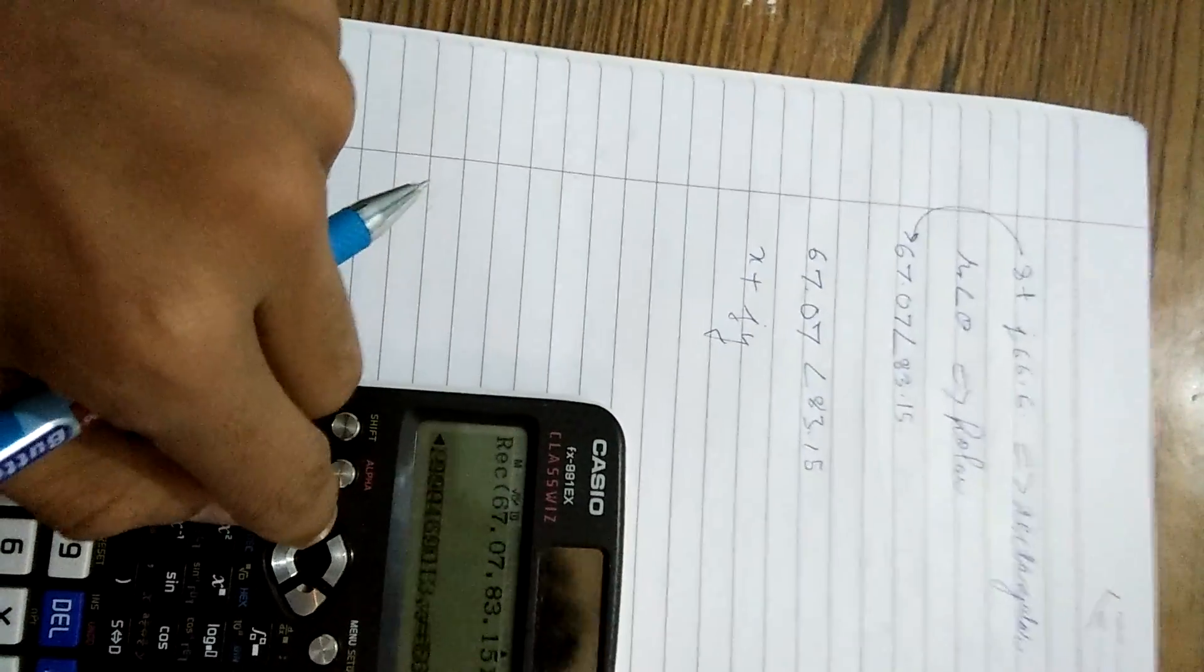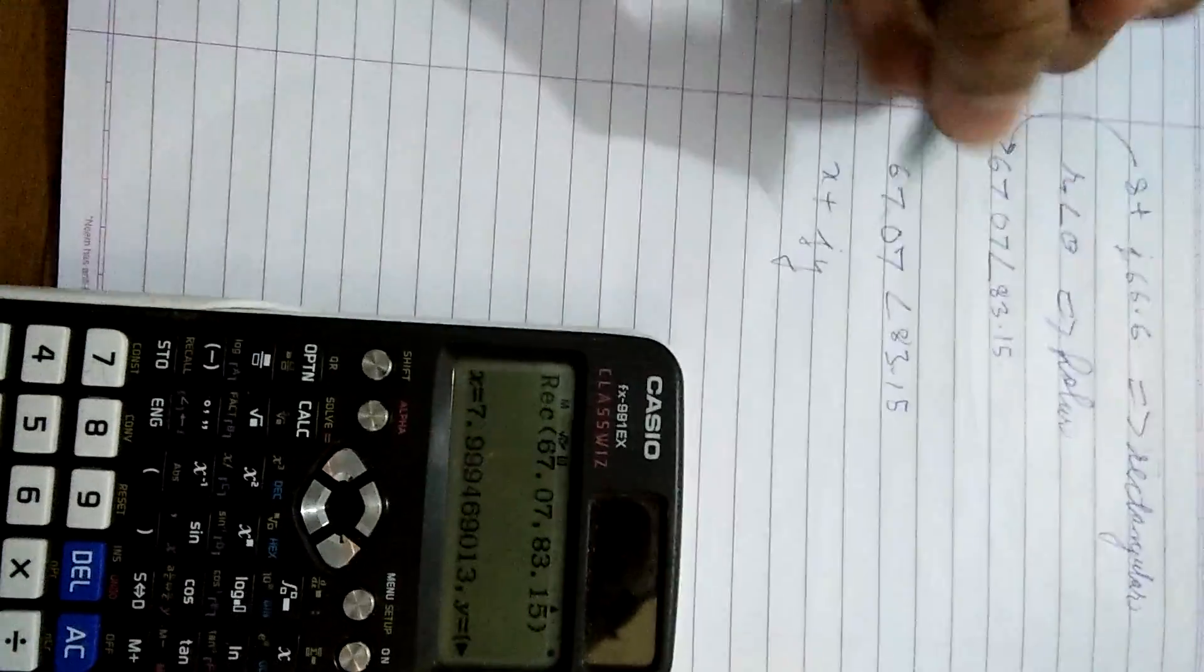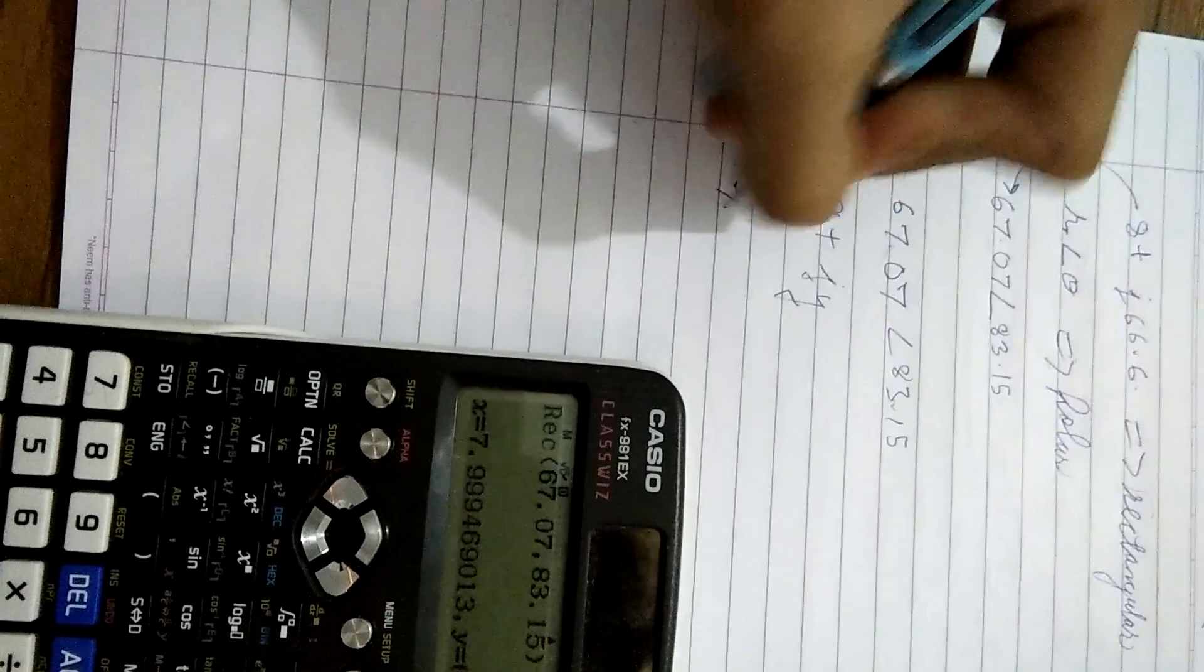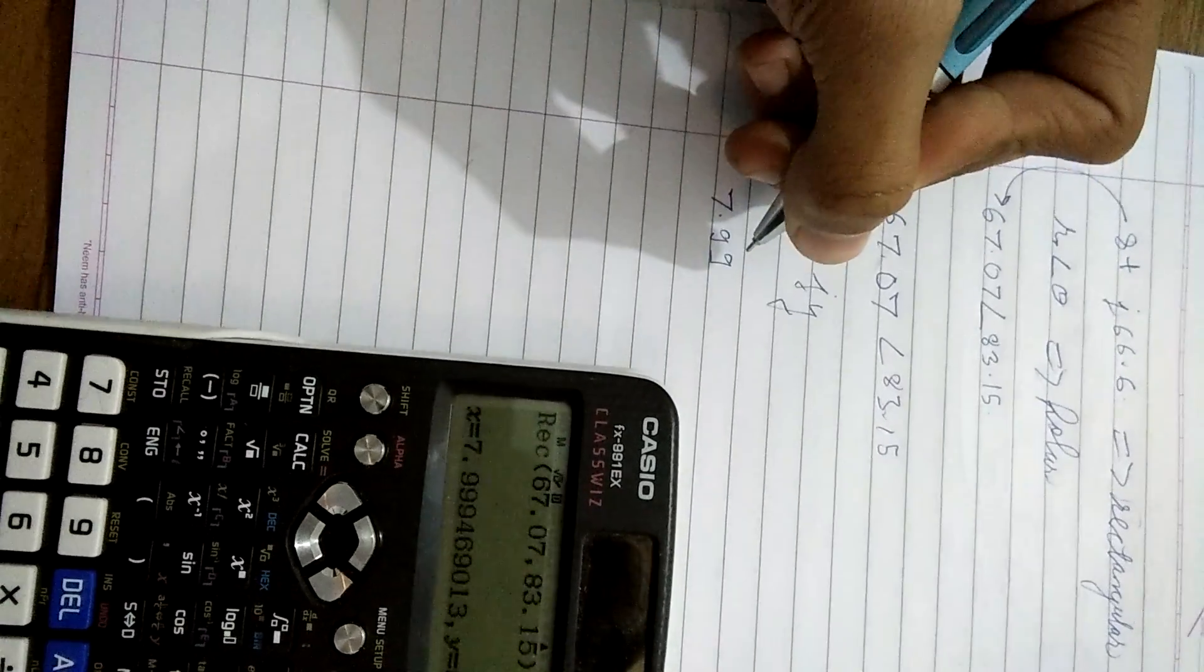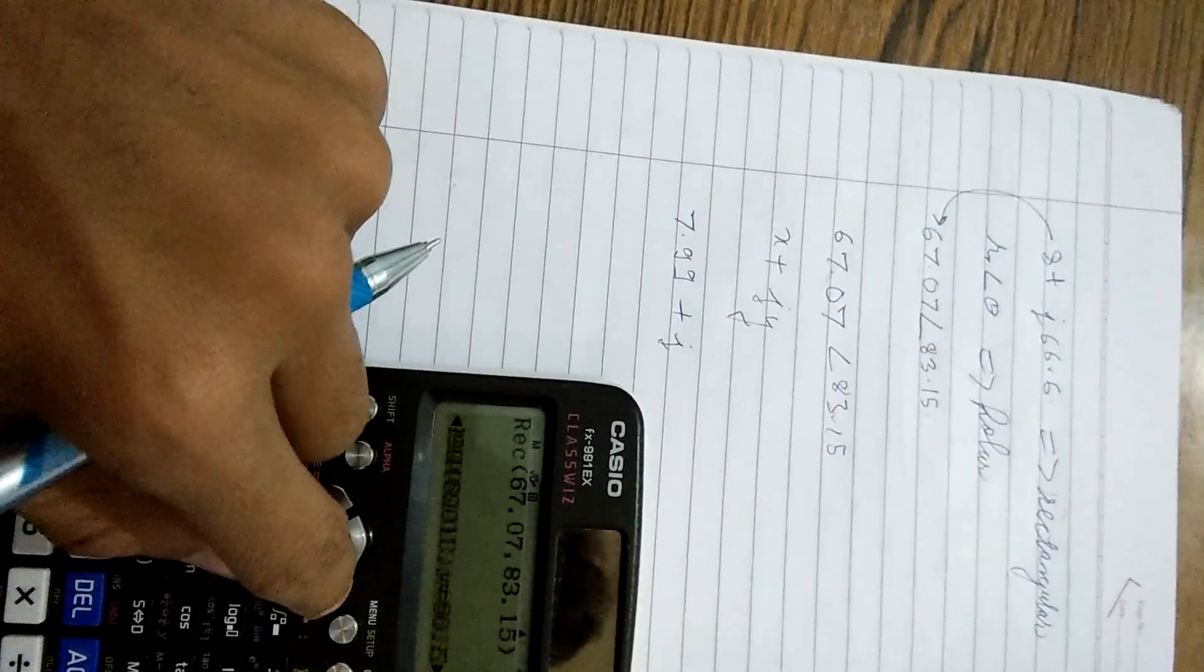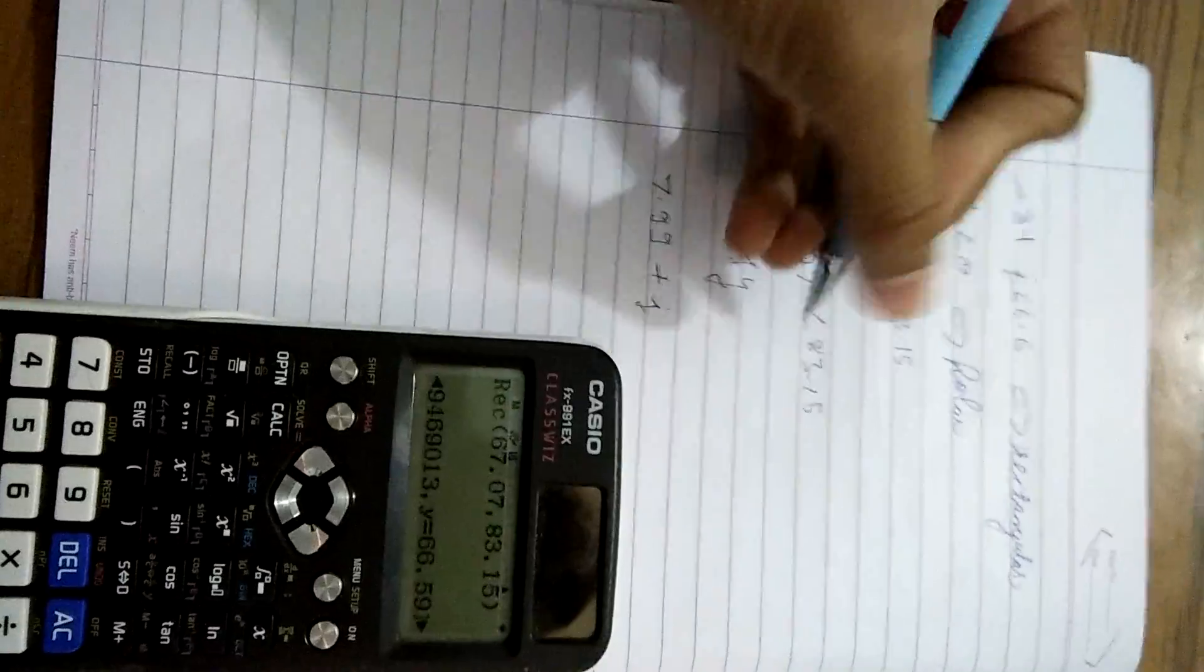Now simply substitute the values what we have got on the calculator. Since x was 7.99 plus j, and y was 66.59.